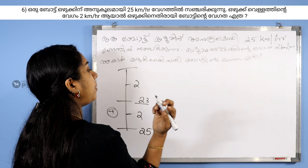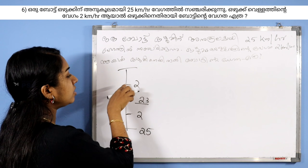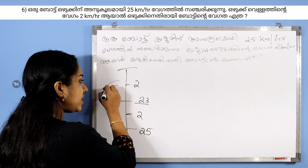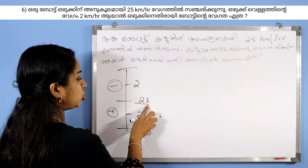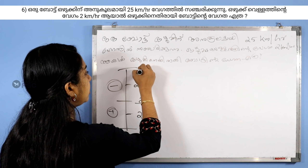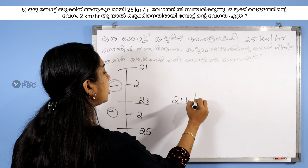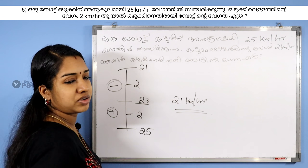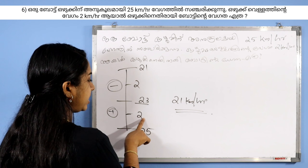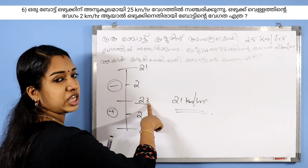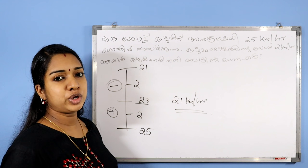If you have one step in front, you can't get your back. If you have two steps in front, you can't get the middle left — the left is minus. Then 2-0 is 23, and our answer is 21 km/h. This is 23, and 23 minus 7 gives the upstream speed.